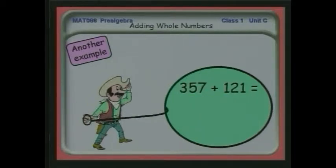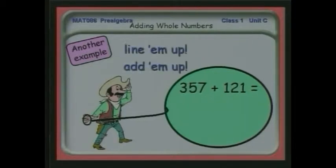Let's look at another example. How about 357 plus 121? We line them up, then we add them up. One and seven is eight. Five and two, seven. Three and one are four.